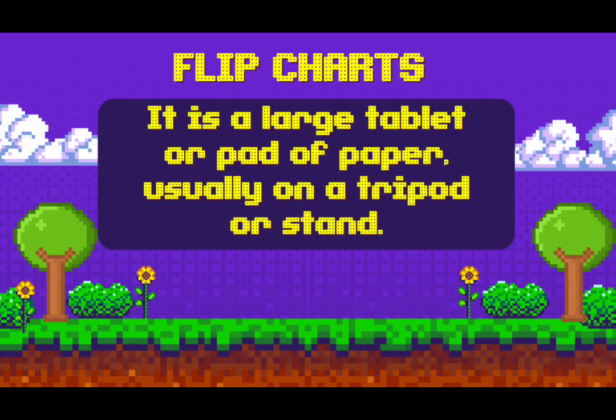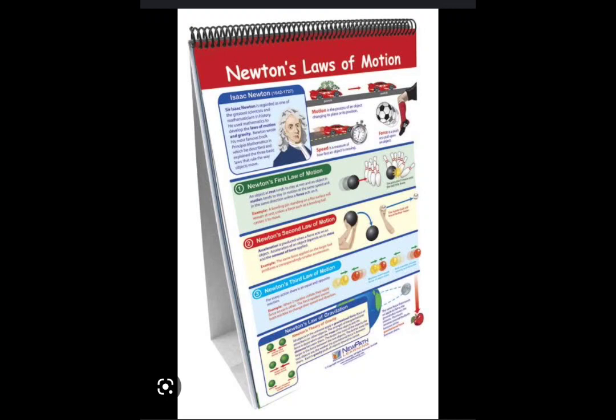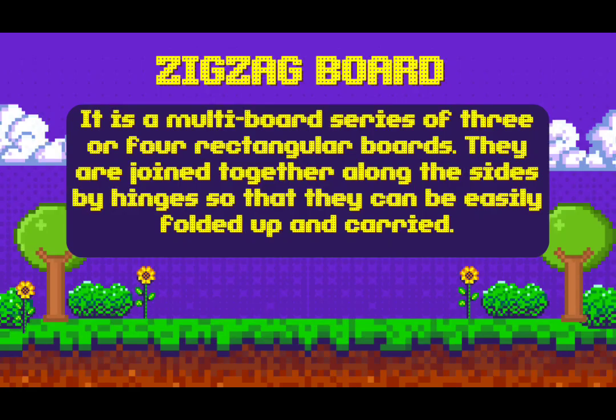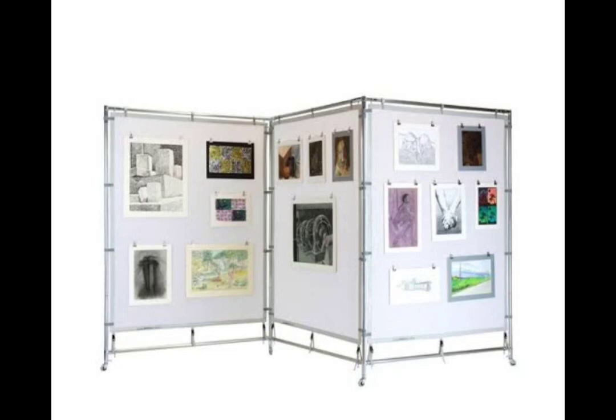Flip chart: it is a large tablet or pad of paper, usually on a tripod or stand. Zigzag board: it is a multi-board series of three or four rectangular boards joined together along the sides with hinges so that they can be easily folded up and carried.